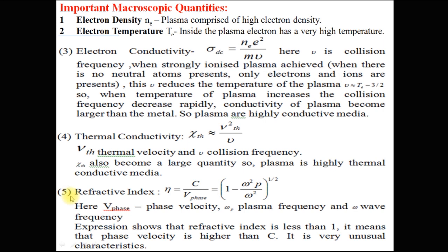The fifth macroscopic quantity is refractive index, given by eta equal to C upon Vth, which equals 1 minus omega_p squared upon omega squared, whole to the power 1 by 2. Here Vth is the phase velocity, omega_p is the plasma frequency, and omega is the wave frequency. This expression shows that the refractive index is less than 1, meaning that the phase velocity is higher than C, which is a very unusual characteristic. Note that in this equation, the quantity is omega_p — that is, plasma frequency — not omega into p.